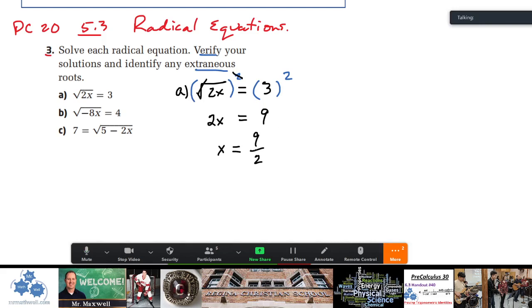And x equals 9 over 2. So let's check that. Verify means we need to check. If we do the square root of 2 times 9 over 2 equals 3, that's square root of, well, 2 times 9 over 2 just gives us √9. And does √9 equal 3? Yeah, it does. So there's 2A, and that's how you do that question.